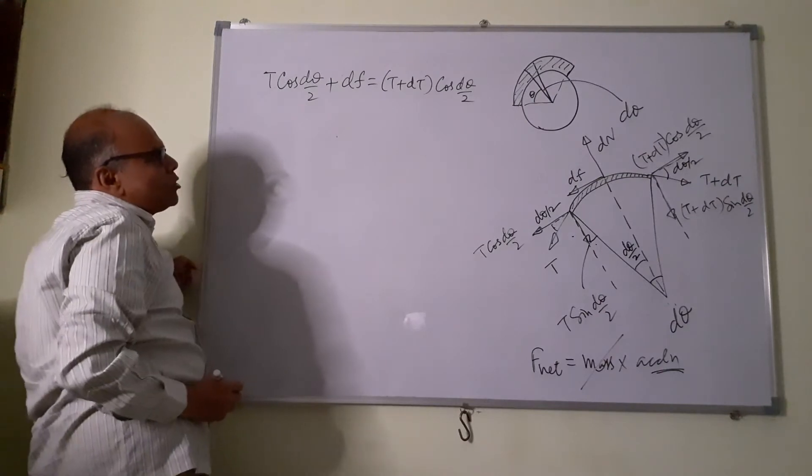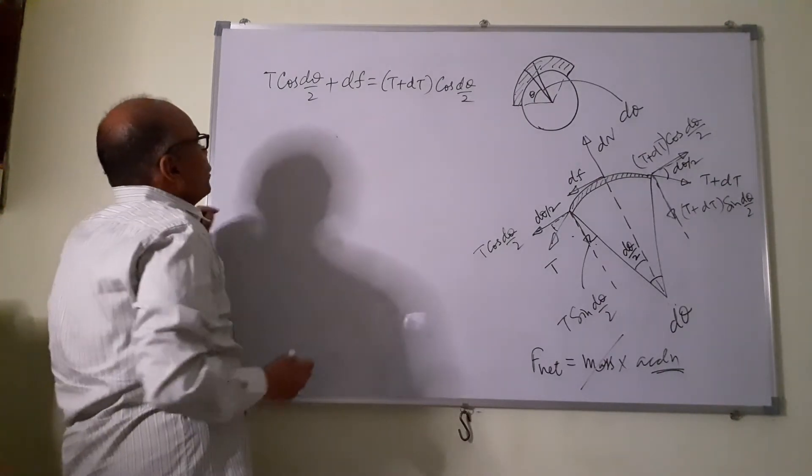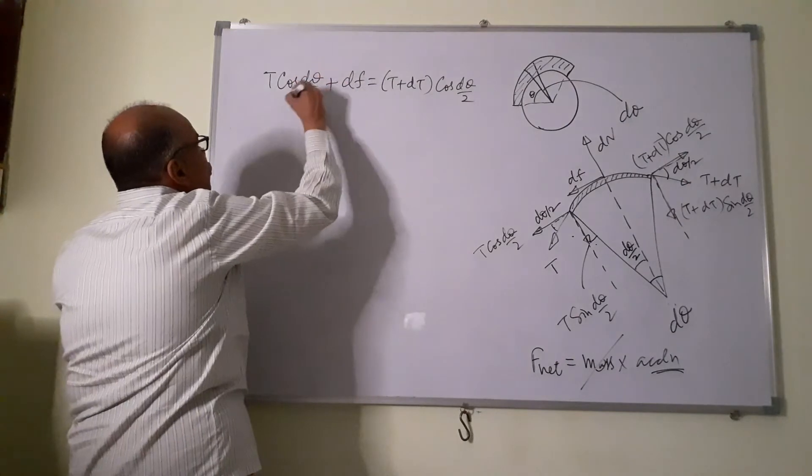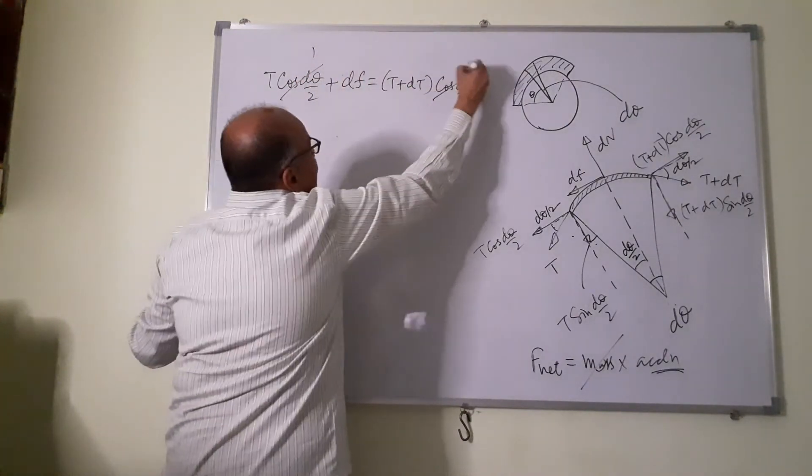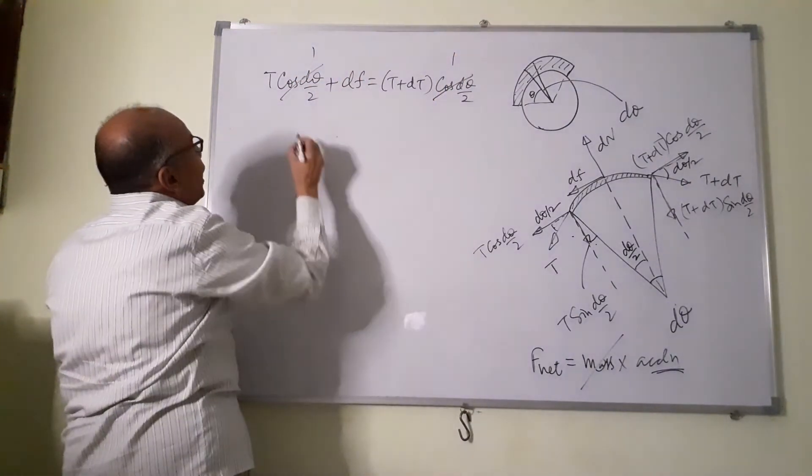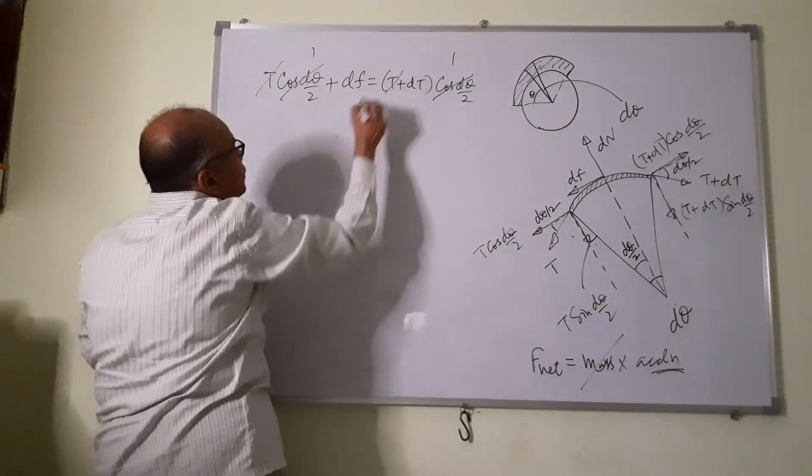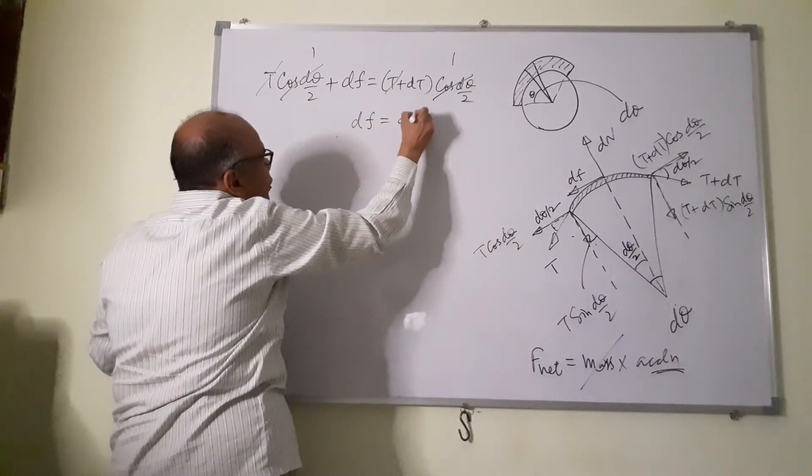So I have basically T cos D theta by 2 plus Df will be equal to T plus Dt cos D theta by 2. Now we know from trigonometric approximation for small theta, cos theta is 1. So this will be 1, this will be 1, and T will cancel on either side. And I get Df equal to Dt.